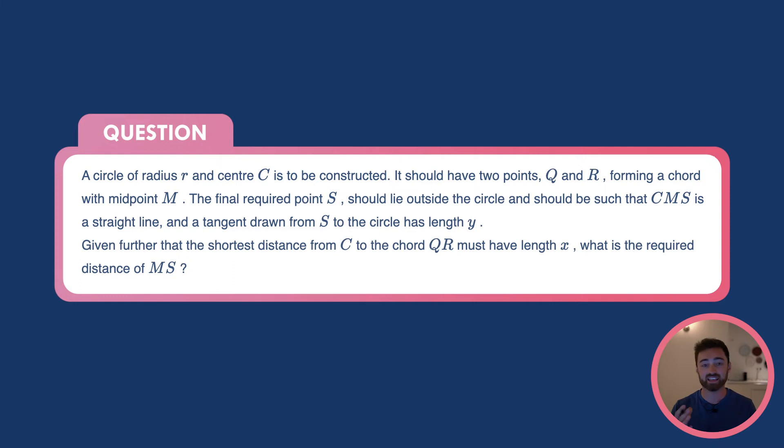A circle of radius R and centre C is to be constructed. It should have two points Q and R forming a chord with midpoint M. The final required point S should lie outside of the circle and should be such that CMS is a straight line and a tangent drawn from S to the circle has length Y. Given further that the shortest distance from C to the chord QR must have length X, what is the required distance of MS?